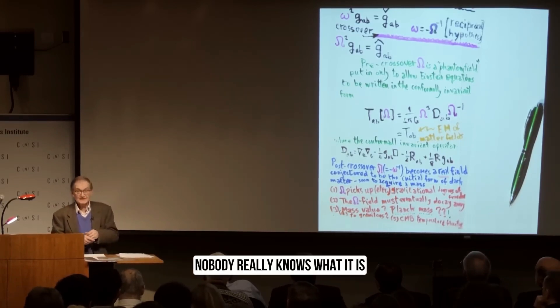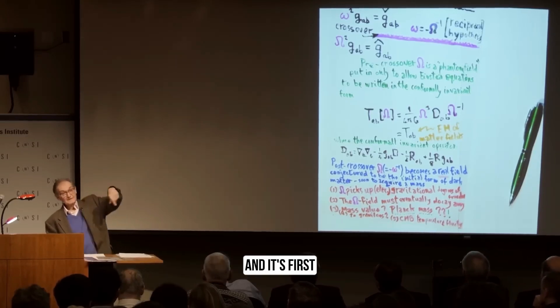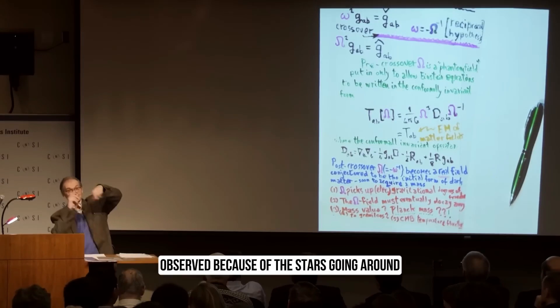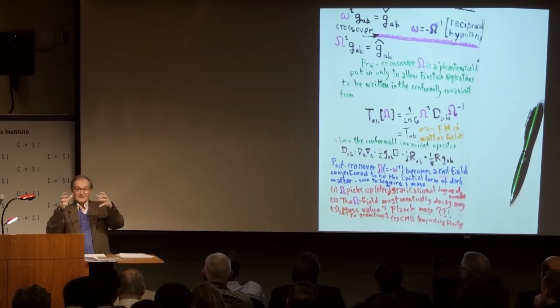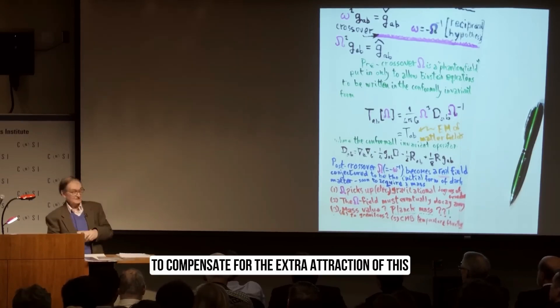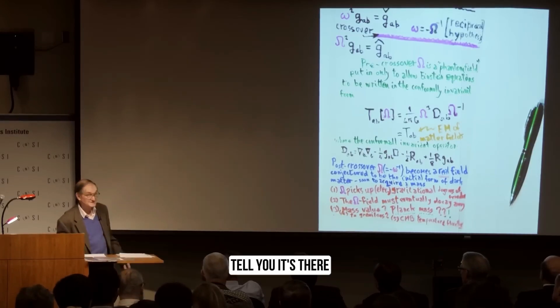Nobody really knows what it is. It's the major part of the mass of a galaxy, first observed because of the stars going around. They go around too fast in order to compensate for the extra attraction of this dark matter. And that's how it was first observed. All sorts of observations cosmologists will tell you it's there.